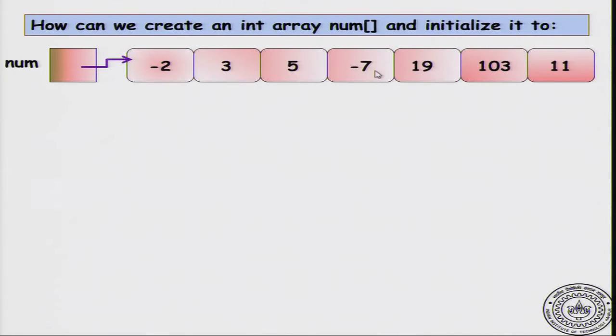For example, I want the num array to look like the following. It contains 7 cells having the values -2, 3, 5, -7 and so on. Now, I know that if C did not allow me to initialize arrays when I declared it, I could declare the array as int num[7] and then I will write num[0] = -2, num[1] = 3, and so on until num[6] = 11. Here is a way that I can create an array and ensure that this state is reached, but is there a more convenient way of doing it? Can I start the array with these contents?